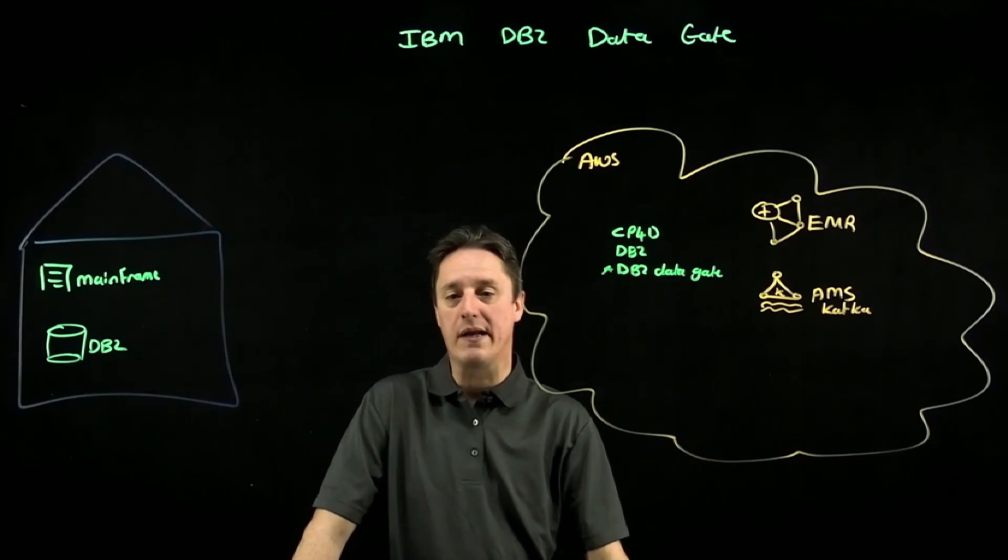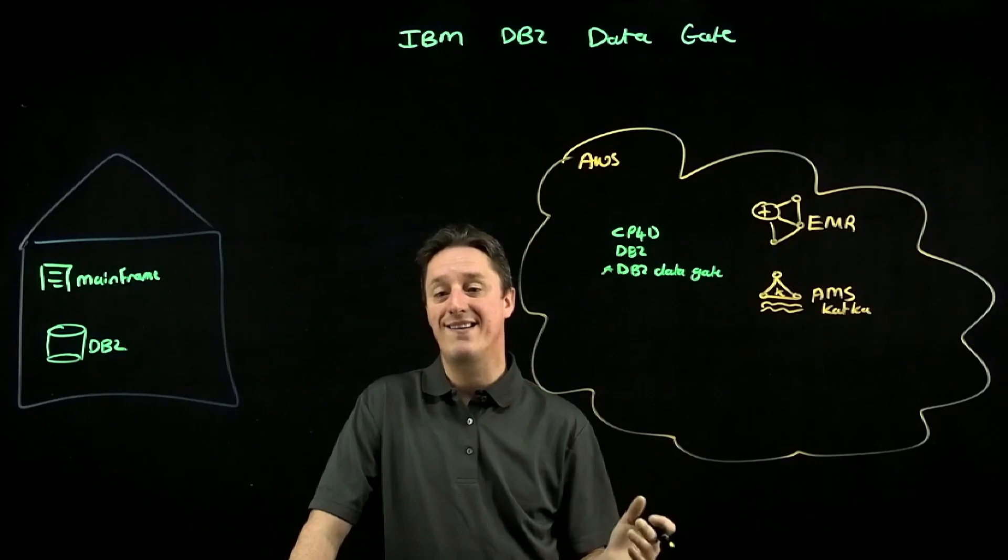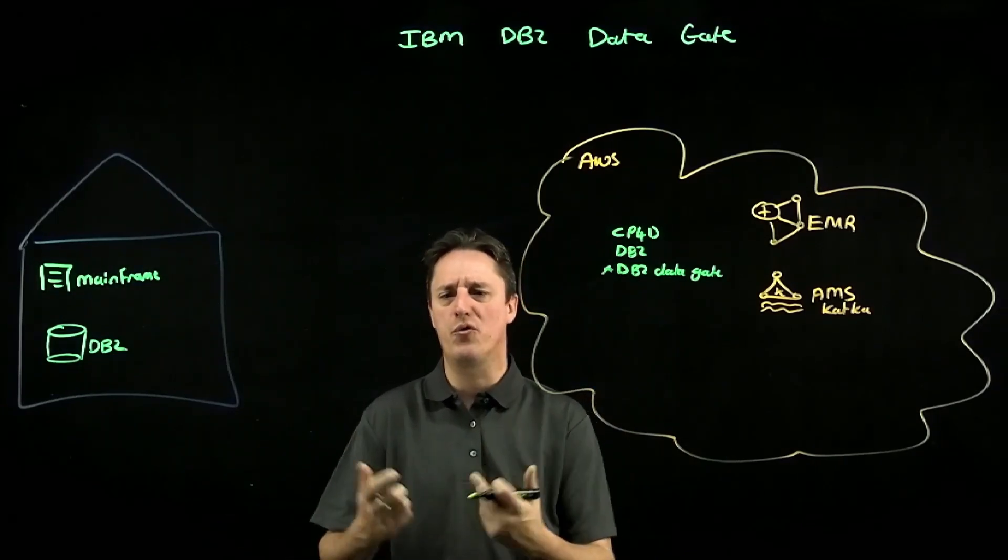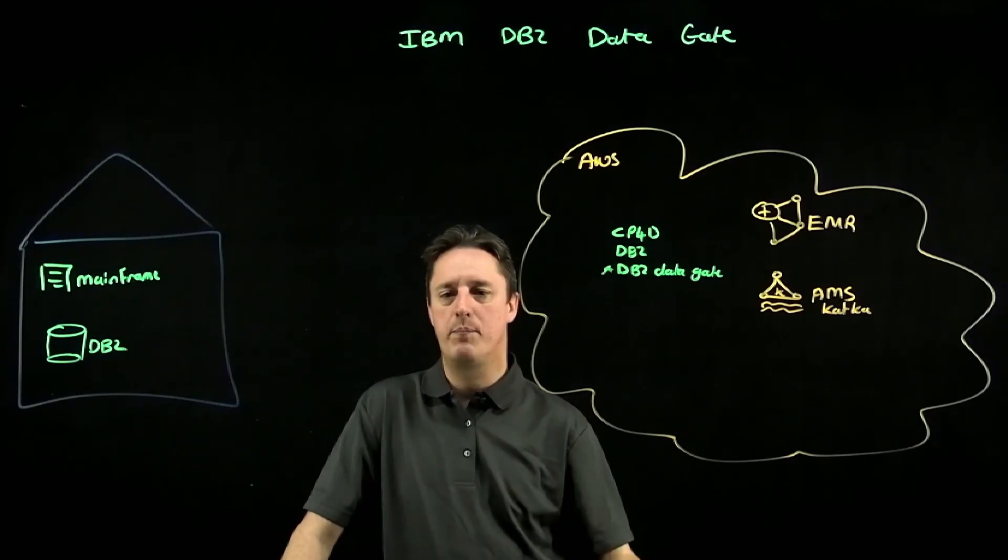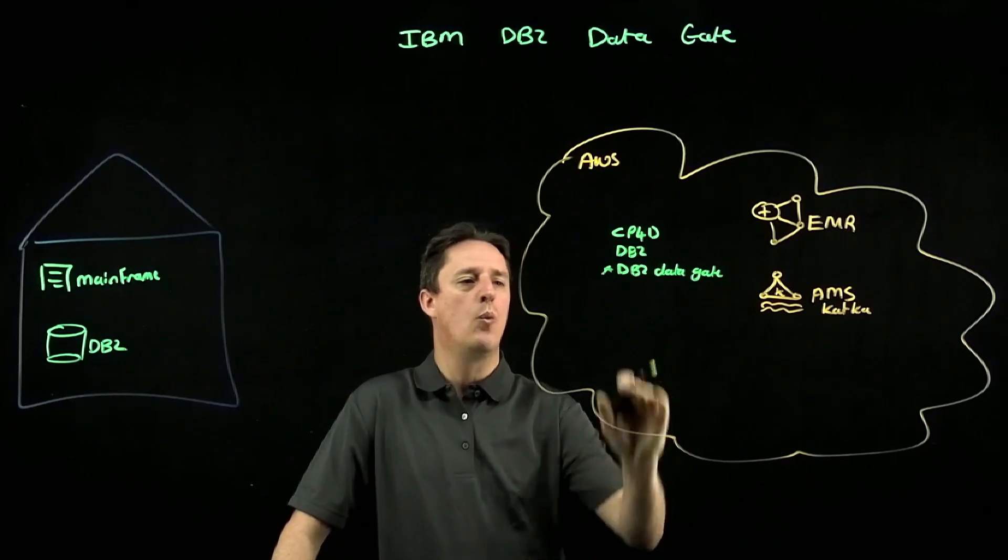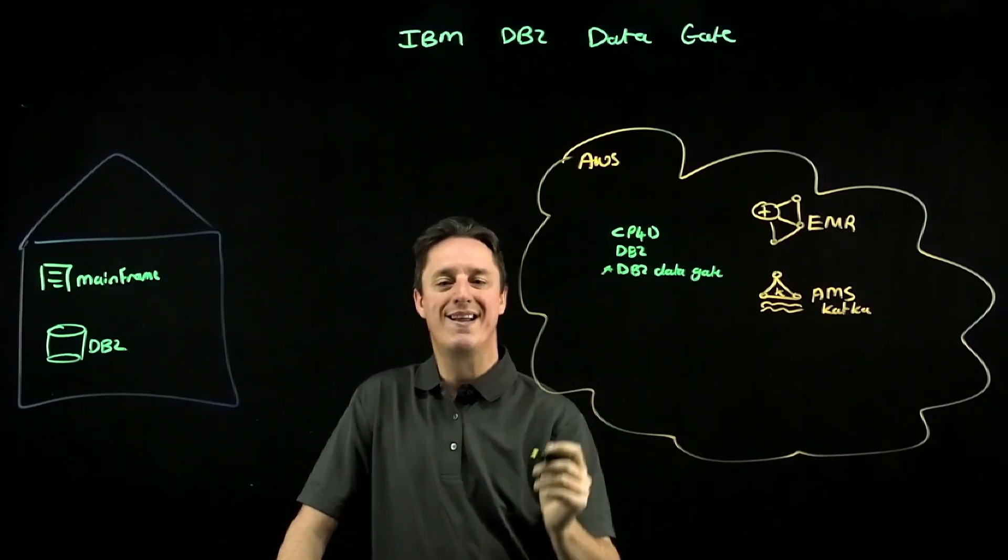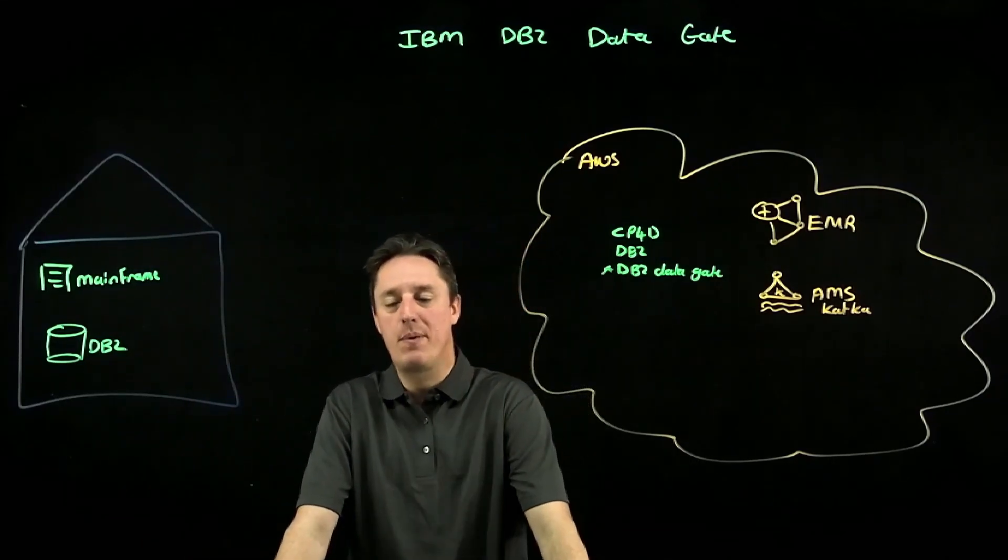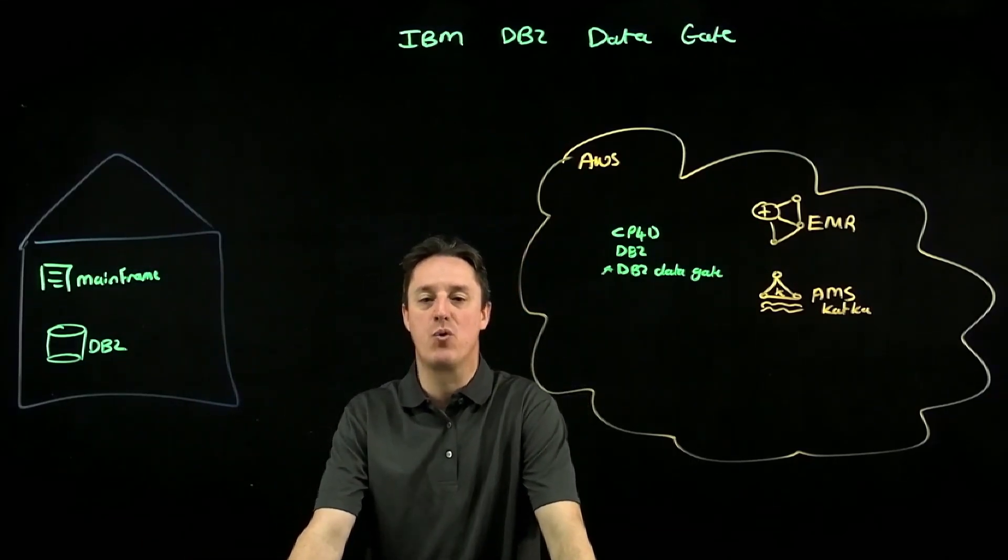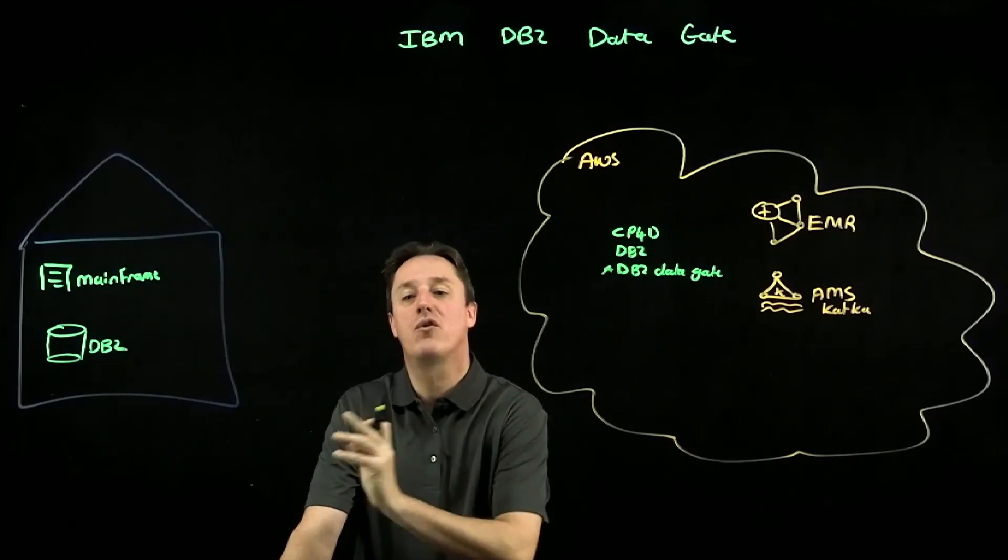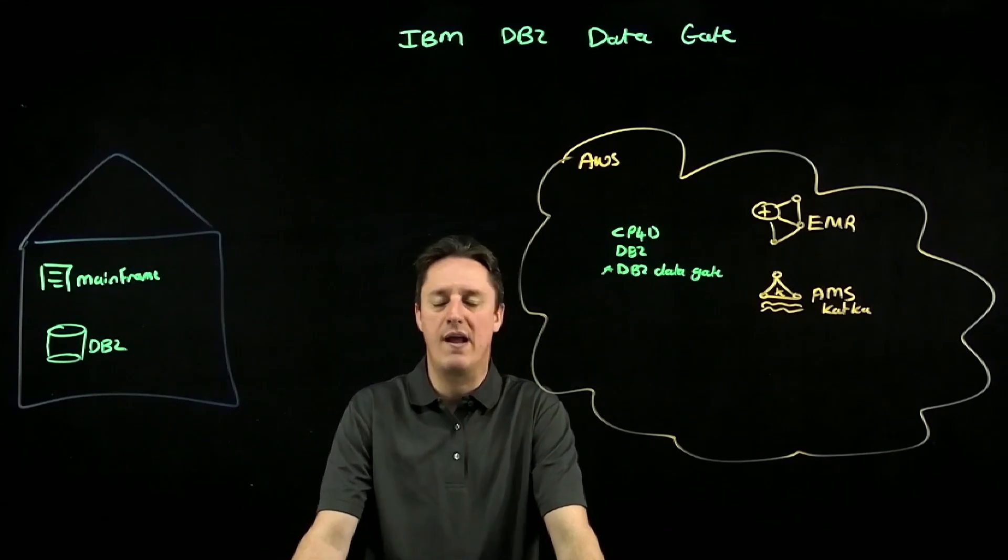Once that is up and running, you can then go and deploy DB2 DataGate as an additional add-on service. You're looking at bringing a Helm chart or an operator post provision of the Cloud Pak for Data and setting that up. Once DataGate is deployed, we can then connect that back to my on-premise databases that are running on those mainframe workloads, and we can specify how frequently we want to synchronize data from on-premises to AWS.